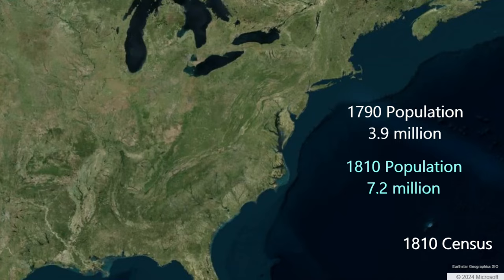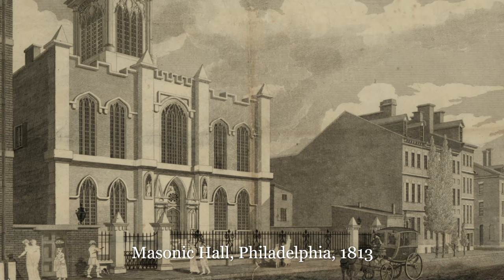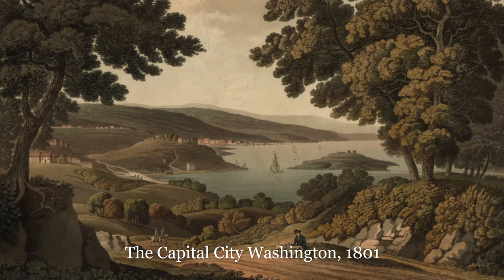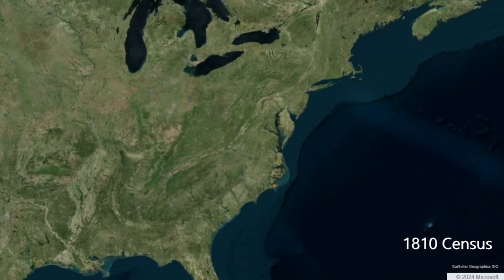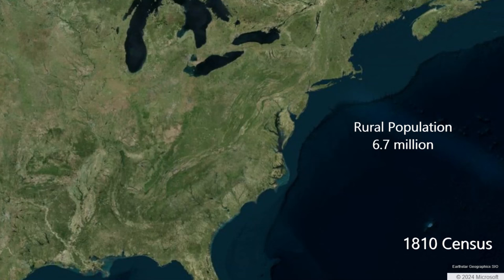Any city in 1810 with more than a few thousand people would have been a major urban center, so the landscape would seem, by today's standards, very rural. A city of 10,000 people in 1810 would be among the largest in the nation. There are 4.3 people per square mile in 1810, meaning that if you walked in any direction for a mile, you would typically encounter a single household of four or five people. 6.7 million Americans, or about 93% of the population, lived in a rural environment. About half a million lived in a city environment.